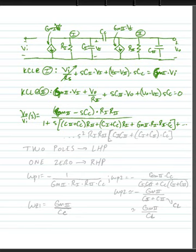Plus CC, plus S squared times R1, R2, times C1, C2, plus C1, plus C2 quantity times CC.